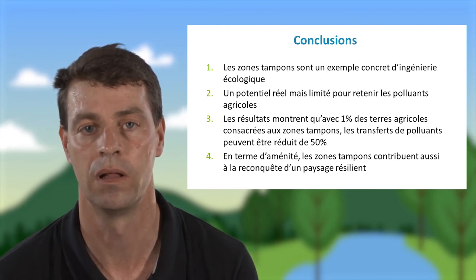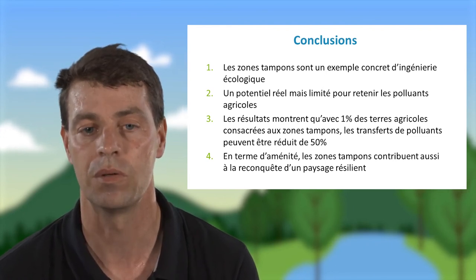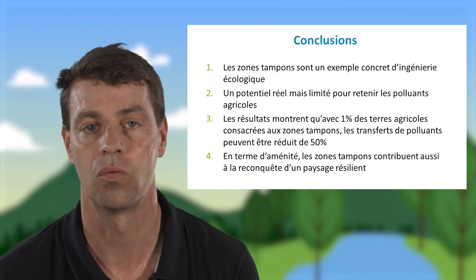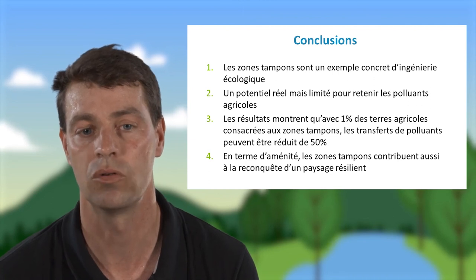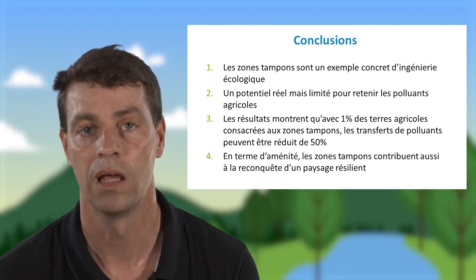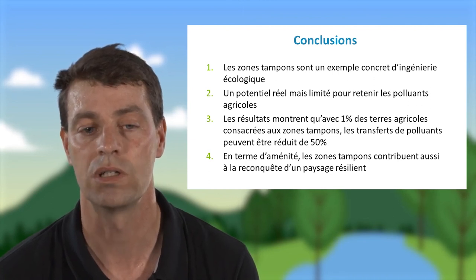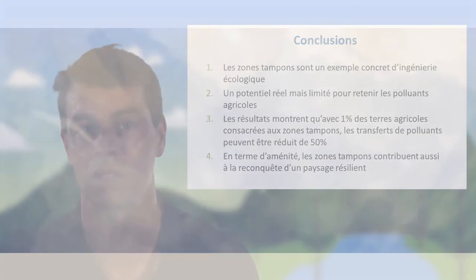C'est un chiffre assez intéressant pour la qualité du milieu aquatique. En termes d'aménité, les zones tampons contribuent aussi à la reconquête de la biodiversité pour aller vers un objectif de paysage résilient.